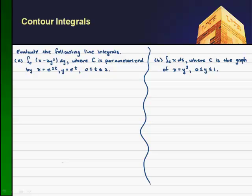So let's evaluate the following line integrals. First, let's find the contour integral of x minus 2y squared dy, where c, the contour, is parameterized by x equals e to the 2t, y equals e to the t, and t varies between 0 and 2.